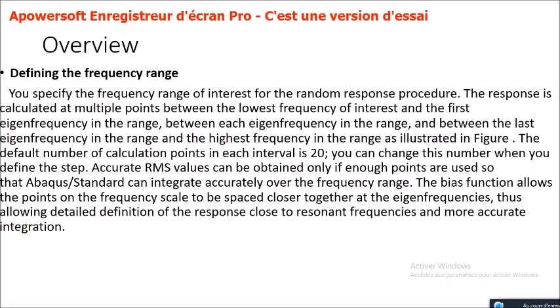Accurate RMS values can be obtained only if enough points are used so that Abacus Standard can integrate accurately over the frequency range. The bias function allows the points on the frequency scale to be spaced closer together at the eigenfrequencies, thus allowing detailed definition of the response close to resonant frequencies and more accurate integration.